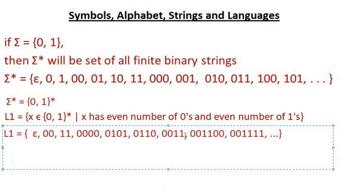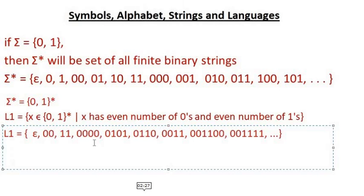So now we can further define our language: a language is a set of strings that is a subset of sigma star. Sigma star has all possible strings that can be made using the symbols of sigma, whereas our language has some of these strings. Therefore, a language is a subset of sigma star. That is the definition of language, and the definition of the terminology of symbols, alphabet, strings, and languages.